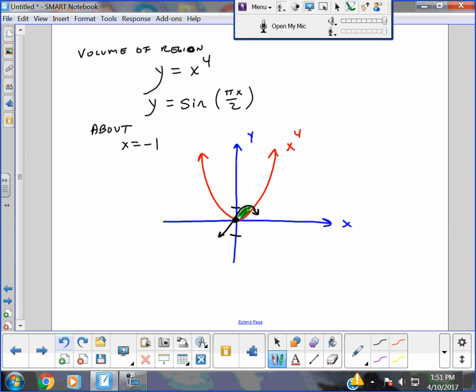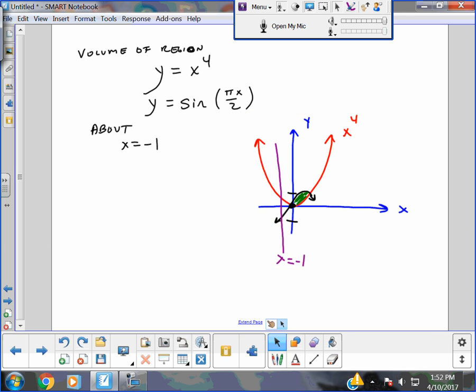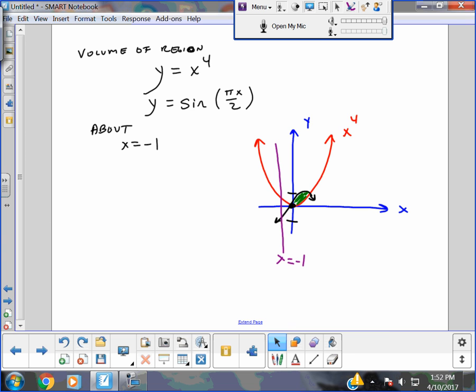So that region, that little green region is going to be spun about x equals negative 1. Well, again, picking the method often is the biggest challenge here. And so I'll box this. And here's the thing that I noticed right away. If I try to do volume equals a to b, and since it's perpendicular this way, it's going to have to be a y, d y.